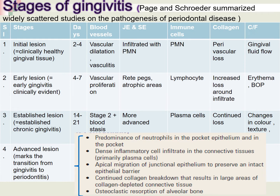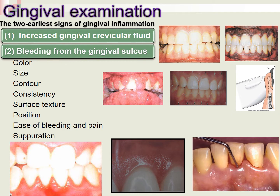The earliest signs of gingival inflammation are increased gingival crevicular fluid and bleeding from the gingival sulcus. For gingival examination, changes in color, size, contour, consistency, surface texture, position of the gingiva, and separation can all be assessed. The next slides will compare normal gingival features with those seen during gingival disease.